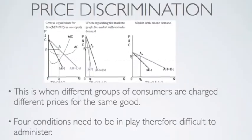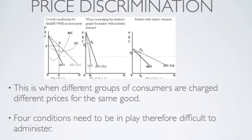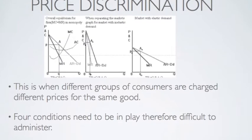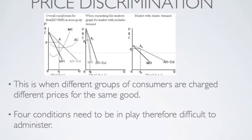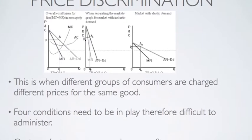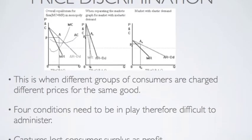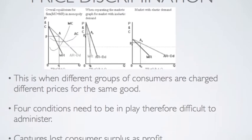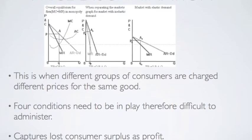Price discrimination is when different groups of consumers are charged different prices for the same good — for example, the same cinema ticket is priced differently for students and differently for adults.